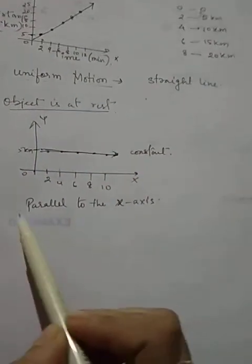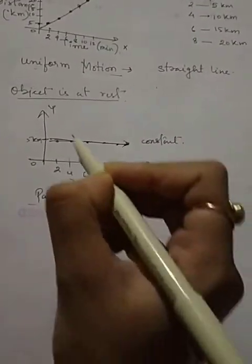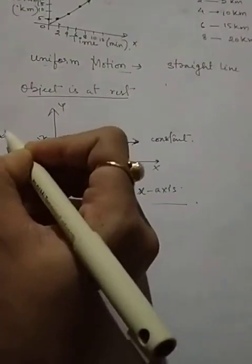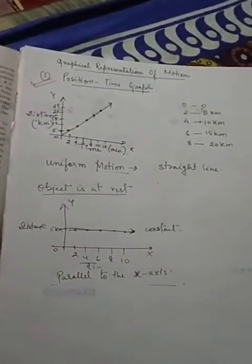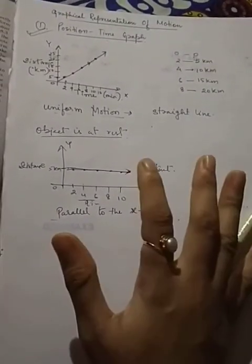This is position-time graph. For uniform motion it's a straight line, and when the object is at rest, this is your distance and this is your time. This is the x-axis and this is the y-axis. I hope you understand. If you understand, comment below.